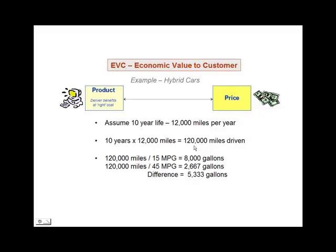We can compute how much gasoline each of these cars is going to use over its life. In the case of our conventional car, it's being driven 120,000 miles at 15 miles per gallon — 15 into 120,000 says that over its life the conventional car will use 8,000 gallons of gas. The hybrid, driven the same distance at 45 miles per gallon, only uses 2,667 gallons — a difference of 5,333 gallons.